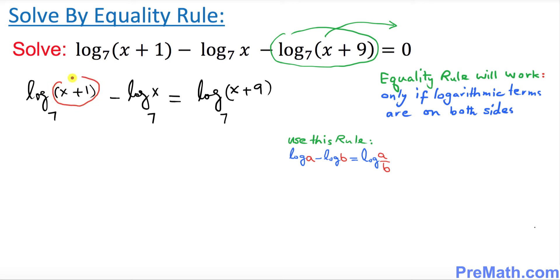This is our a, this part is our b. So if you want to compress using this rule it's going to become log₇((x+1)/x) equal to log₇(x+9).